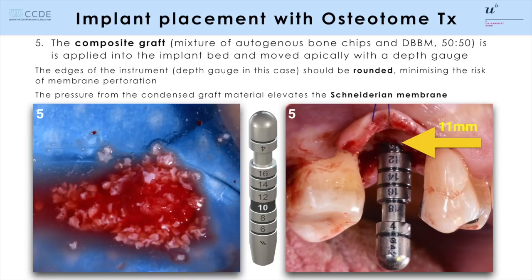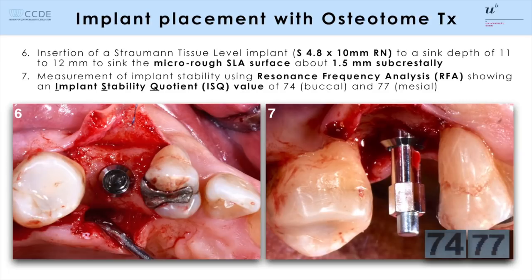The depth gauge is inserted to a sink depth of about 11 millimeters. As next, the wide body tissue level implant of Straumann is inserted without pre-tapping the threads to optimize primary stability. The micro rough SLA surface is positioned about 1.5 millimeters below the crest, leaving the implant shoulder in a supracrestal position. This hybrid designed implant is used for more than 30 years at the University of Bern and has shown excellent long-term stability in multiple clinical studies.